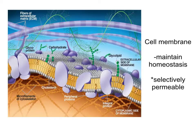Let's talk more specifically about the cell membrane. The cell membrane maintains homeostasis, and it does that by being selectively permeable — meaning it only lets certain things go in and out. So by maintaining homeostasis, it's able to control what goes in and out of the cell.